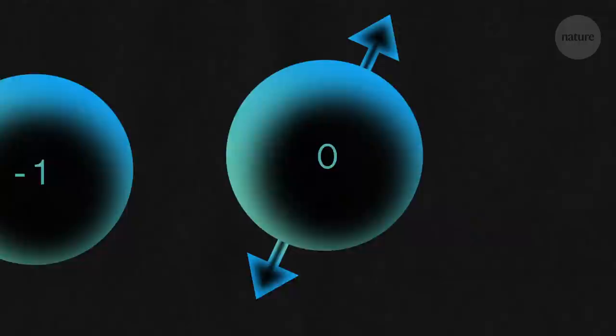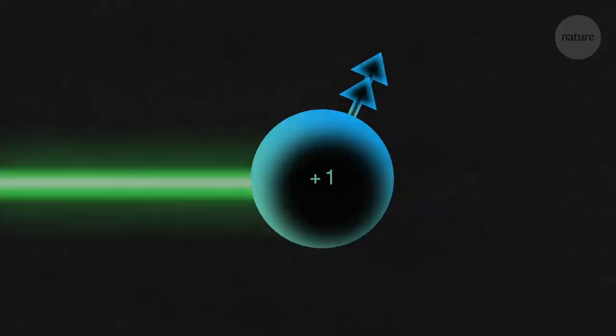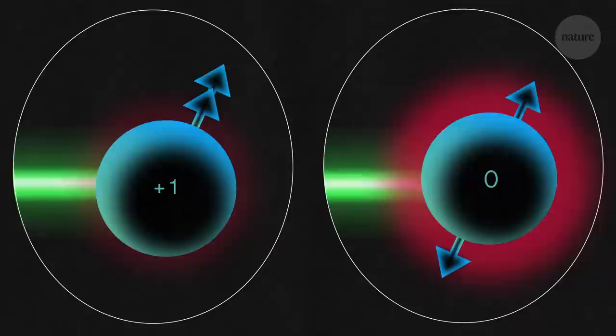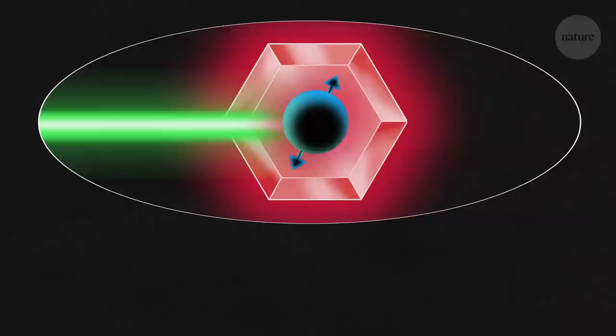And it's this spin that makes NV centers so handy to physicists. If you shine a green laser on an NV center, it re-emits light at a lower, red frequency. But an NV center emits more light when it's in the zero spin state than when its needles are both pointing up or down.